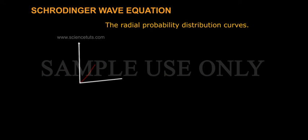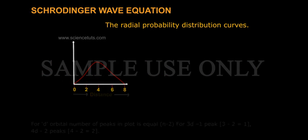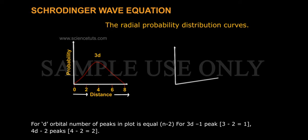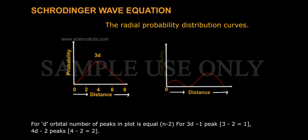The radial probability distribution curves. For D orbital, number of peaks in plot is equal to n minus 2. For 3D, 1 peak: 3 minus 2 equals 1.